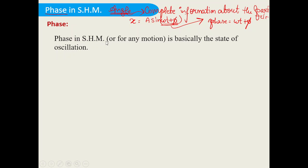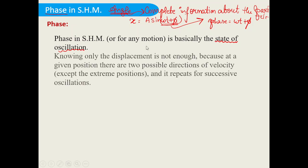Phase in oscillation — or for any motion — is basically the state of oscillation. The state of oscillation means complete information about the oscillation, complete information about the particle.